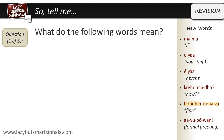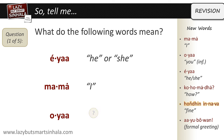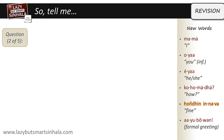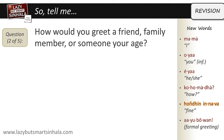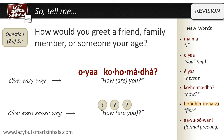Alright, so tell me — what do the following words mean? Ea... he or she. Mama... I. How would you greet a friend, family member, or someone of your age? I'll give you a clue — there are two ways: the easy way and the even easier way. The easy way is oyaa kohomadha. And the even easier way is just kohomadha.